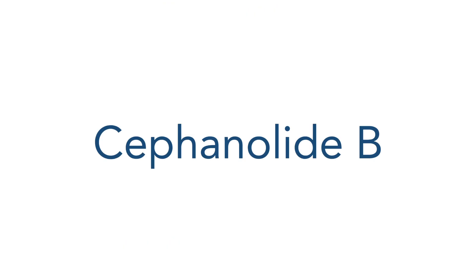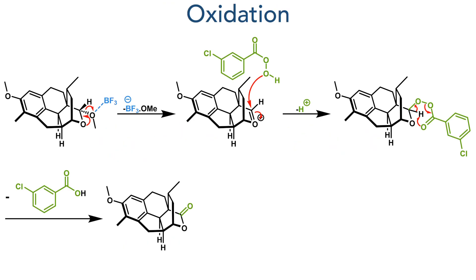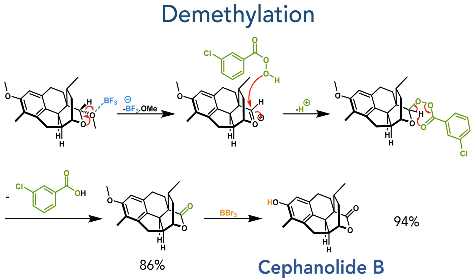Moving forward to cephanolide B, they started with the same methoxyacetal, which was oxidized using boron trifluoride and MCPBA. The boron trifluoride first coordinates to the acetal, promoting the formation of an oxocarbenium ion, which is then attacked by MCPBA. An intramolecular hydrogen abstraction then occurs, eliminating meta-chlorobenzoic acid and forming an ester. As before, the compound could be demethylated using boron tribromide to form cephanolide B in a 94% yield.